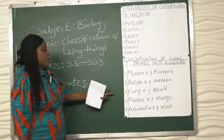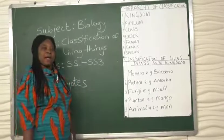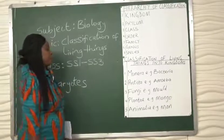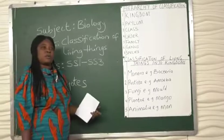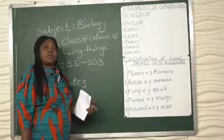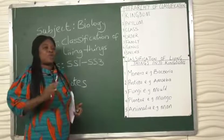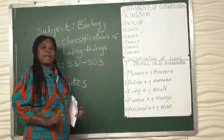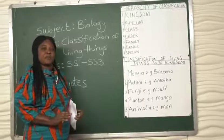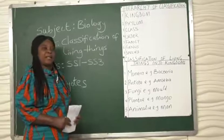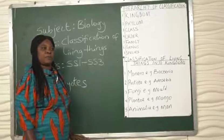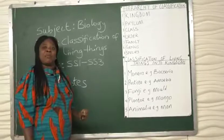The next one is the fungi. The kingdom fungi. These ones include the plants that don't have chlorophyll. They cannot make food for themselves. So they depend on dead organic matter for their food. Example is the bread mold.